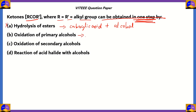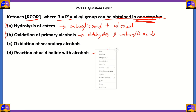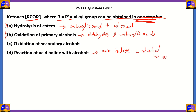Option D — reaction of acid halide with alcohols — gives you esters plus a hydrogen halide (HX). So options A, B, and D are incorrect.